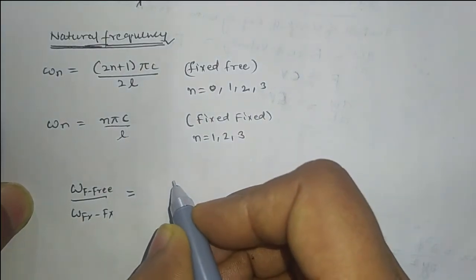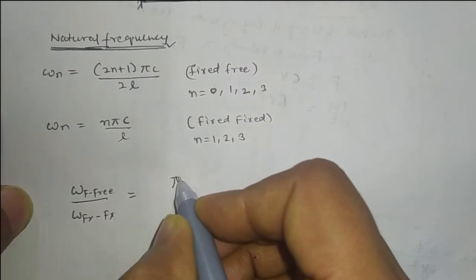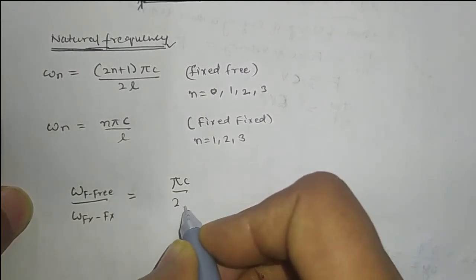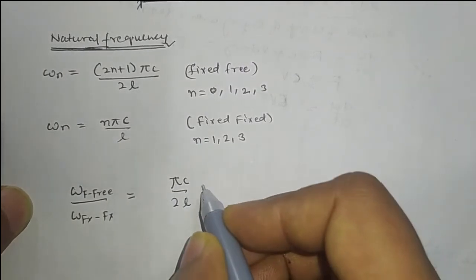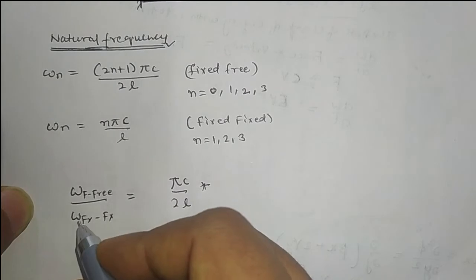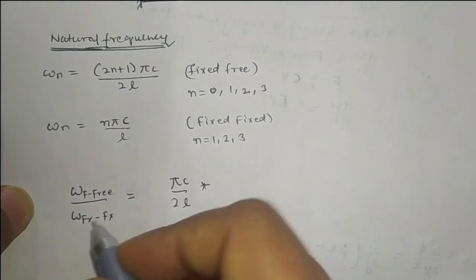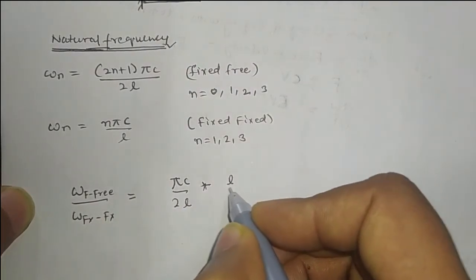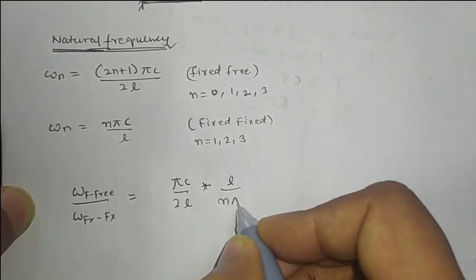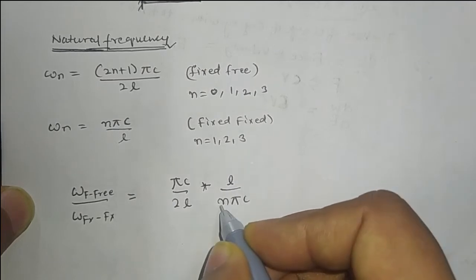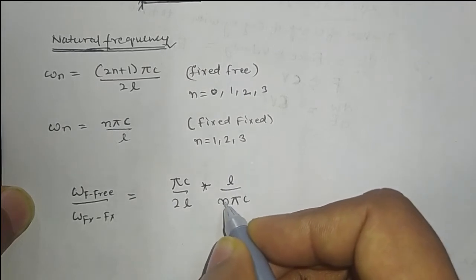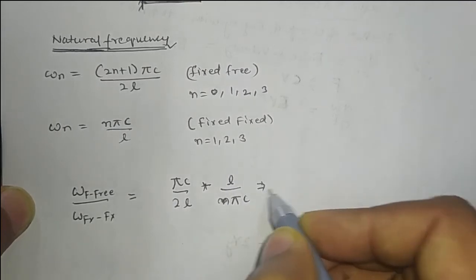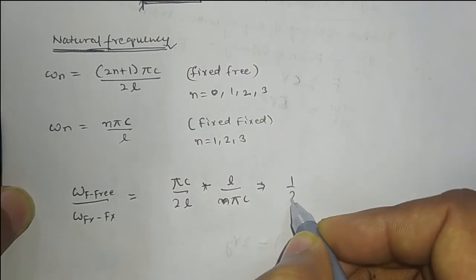Substituting n = 0 for fixed-free and n = 1 for fixed-fixed into the respective formulas and dividing, we get a ratio of 1/2. So the natural frequency of the fixed-free system is half that of the fixed-fixed system.